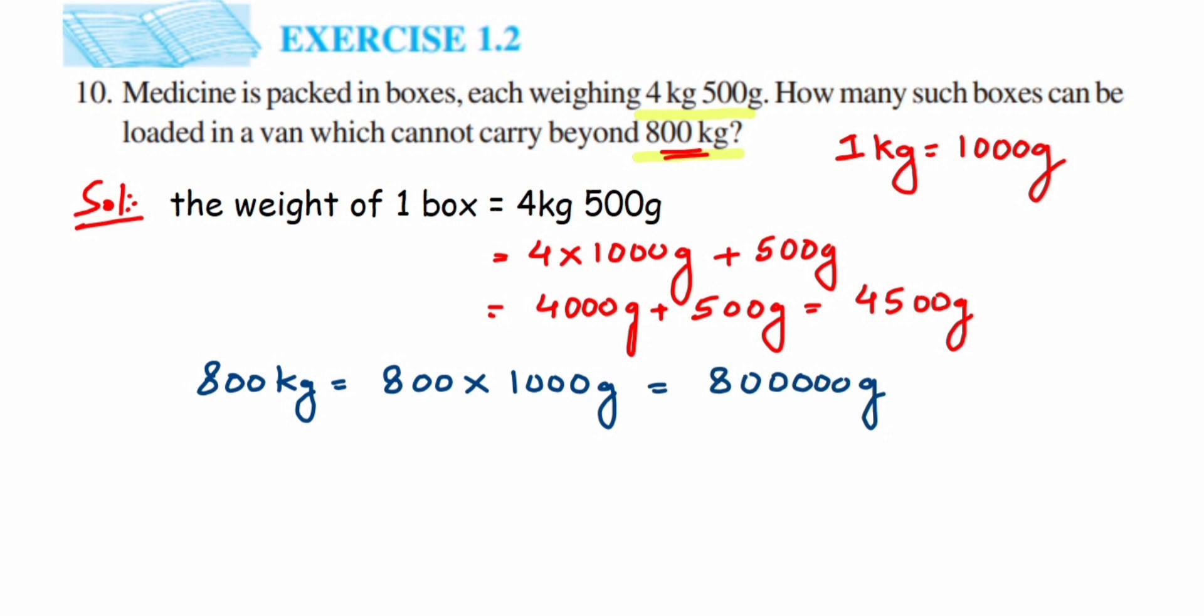The number of boxes which we can load in a van is equal to 800,000 grams divided by 4500 grams. The gram units will get cancelled, so you can ignore this gram unit.